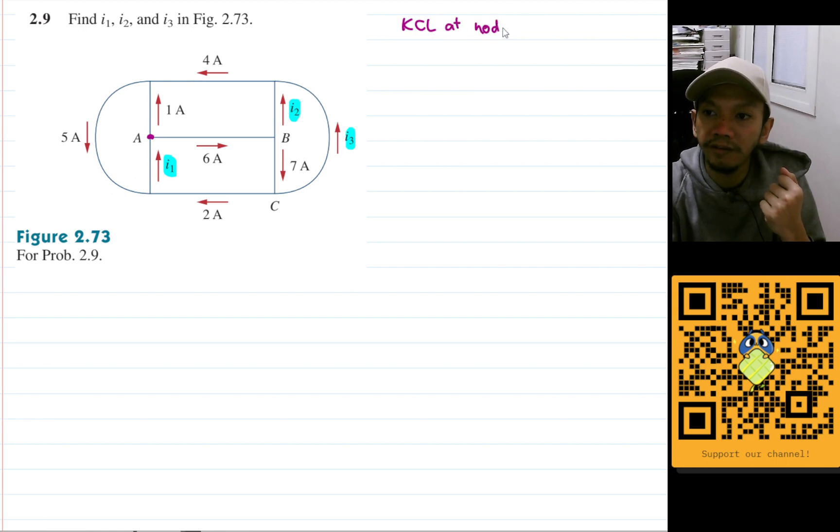So KCL at node A. KCL says that the sum of the currents that goes in will equal the sum of the currents that goes out. At node A, the only current that goes in is i1, so let's do that.